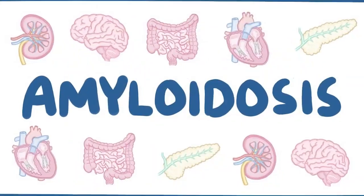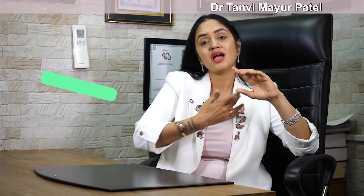Another medical condition is amyloidosis. Though not very common — it is a relatively rare condition — people with amyloidosis can also have foamy urine. Additionally, medications used to treat urinary tract infections, like AZO or Pyridium, can also give you foamy urine.